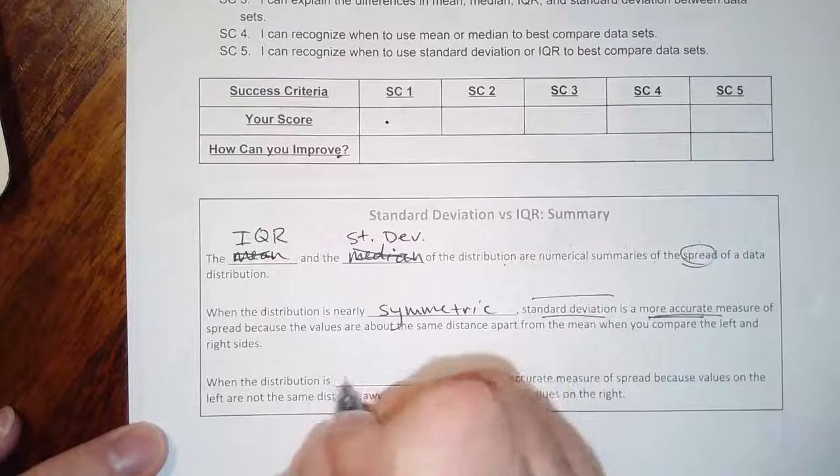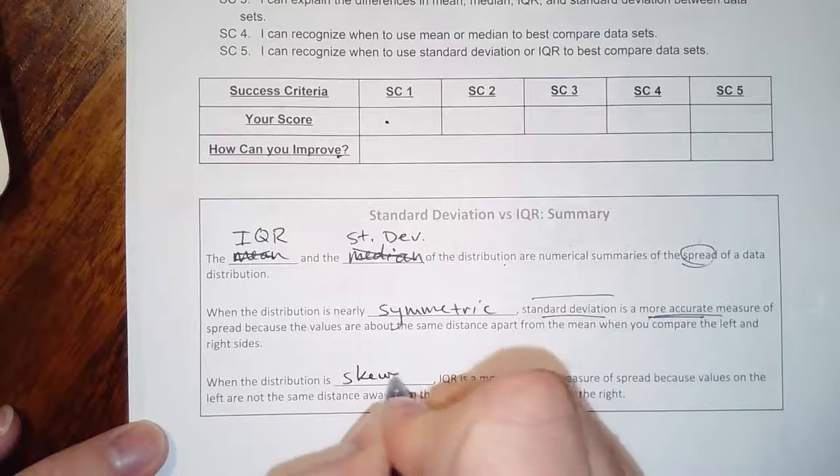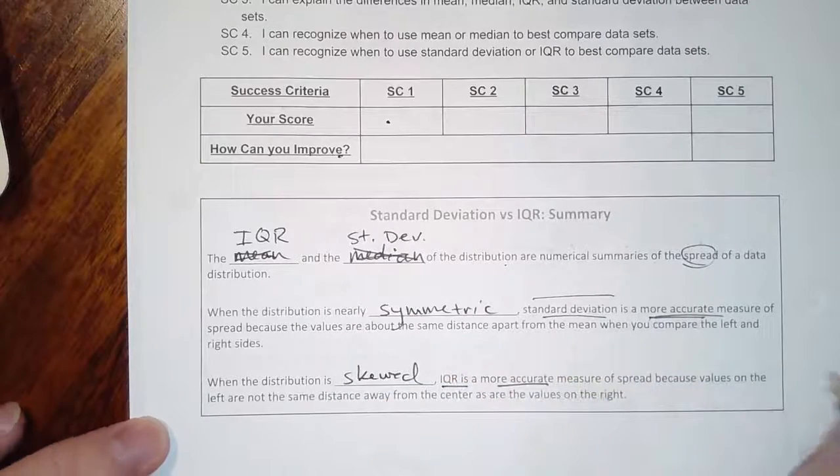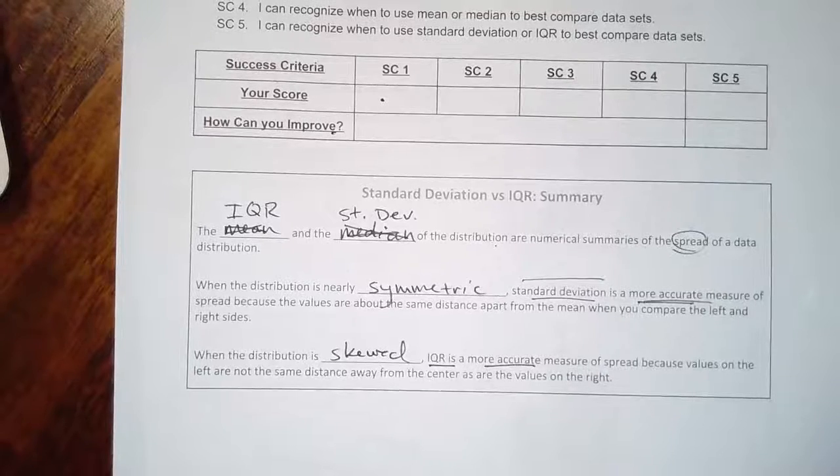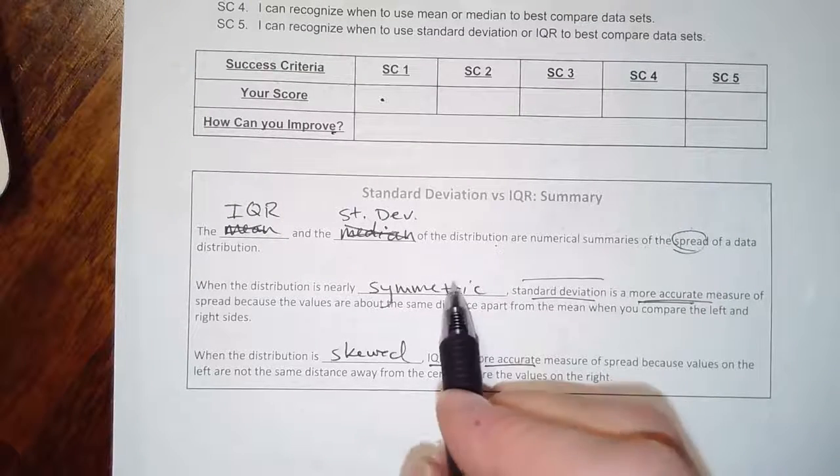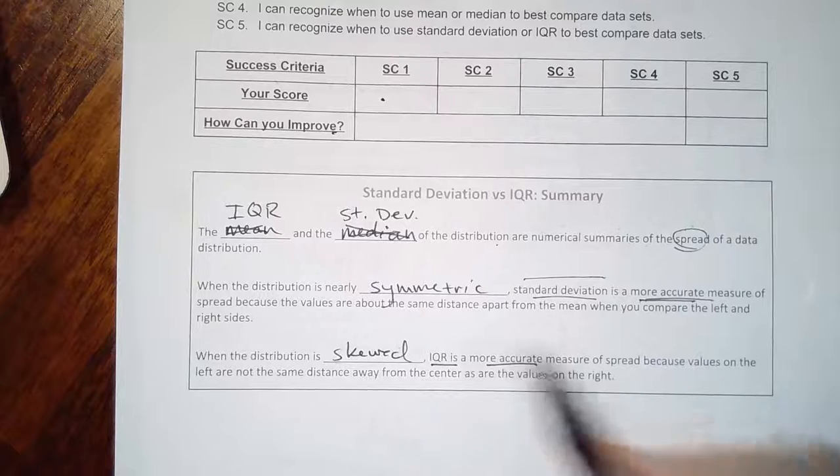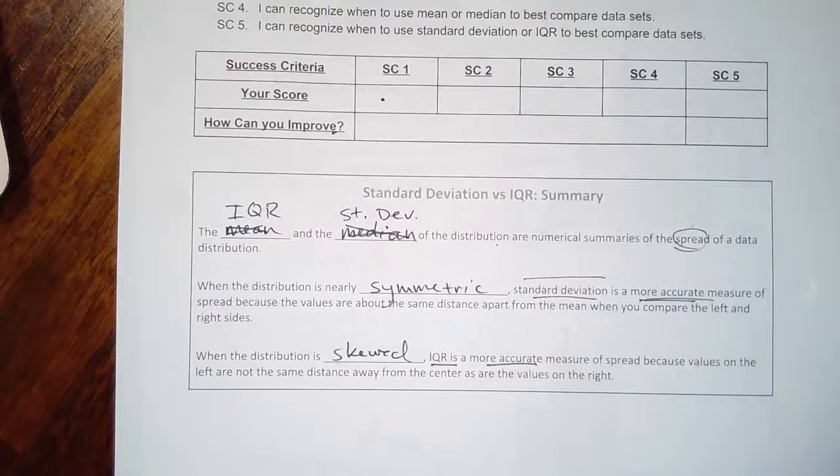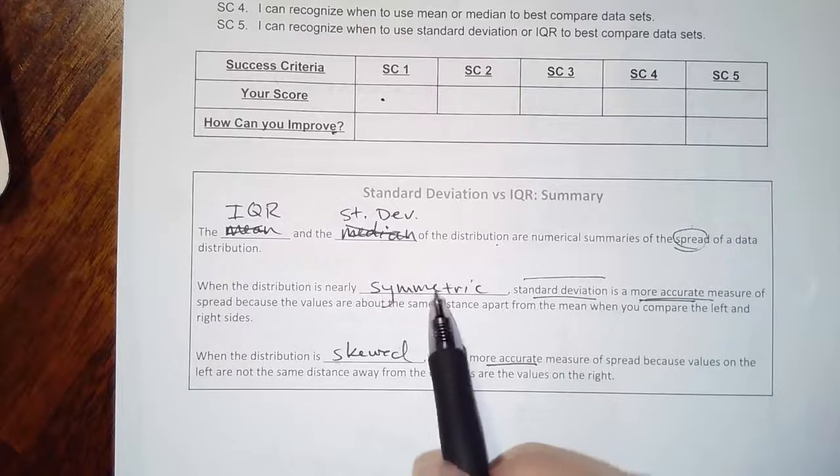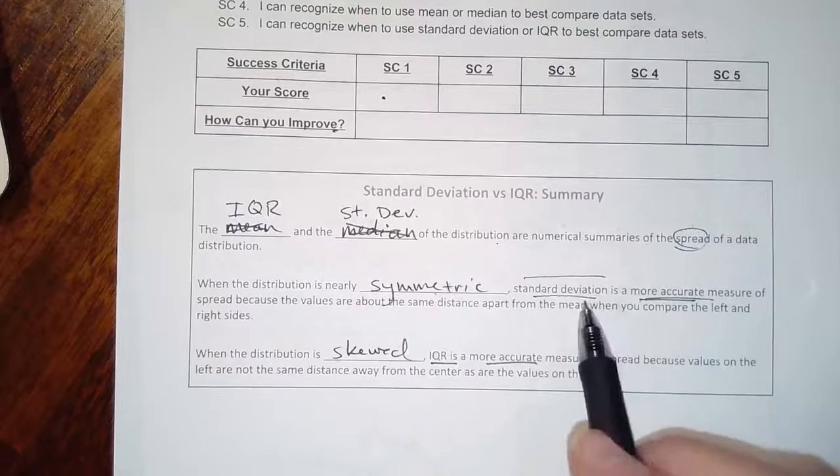When the distribution is skewed, IQR is more accurate, mainly because we lose the power of standard deviation from the fact that the distribution is skewed. So therefore, the mean and median don't line up. But if the mean and median are close, you probably have a symmetric graph, and standard deviation has way more statistical power with standard deviation. All right, that's about all I need to say.